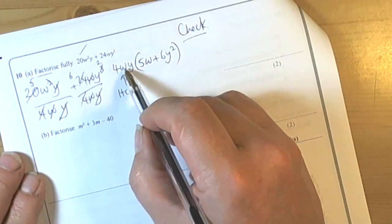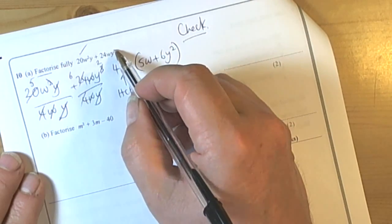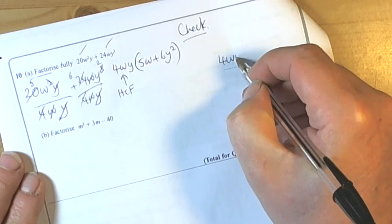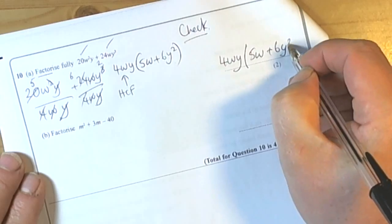4 times 6 is 24, W times... yep so we've got W. Y times Y squared is Y cubed, so that checks out as well. So we're going to be confident our answer is 4YW brackets 5W plus 6Y squared.